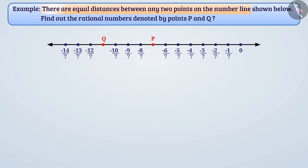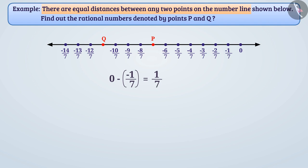There are equal distances between any two points on the number line shown. To find this distance, we will subtract the number to the left of it from a number. For example, 0 minus (minus 1 by 7) is equal to 1 by 7. That is, the distance between 0 and minus 1 by 7 is 1 by 7 units.